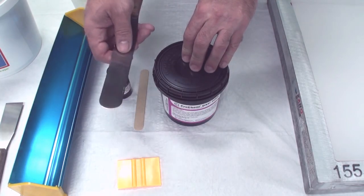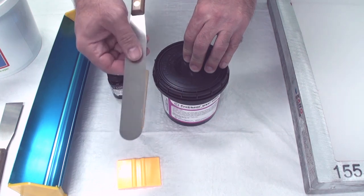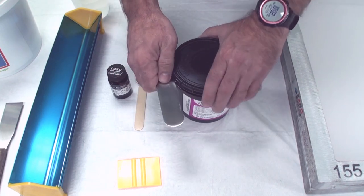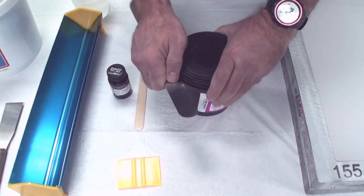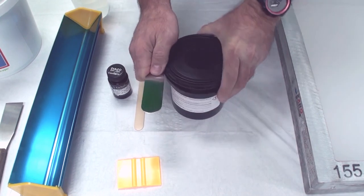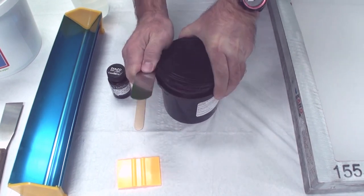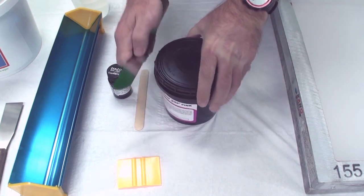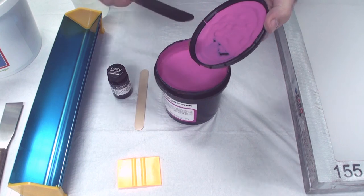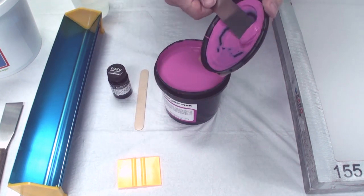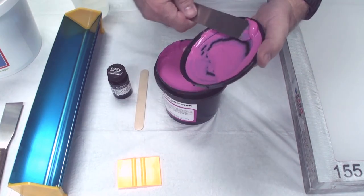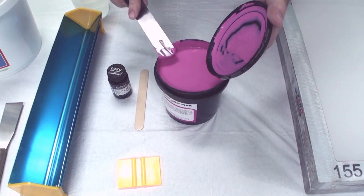For opening the quart container sometimes getting an ink spatula or screwdriver or something like that will make it easier to open. Basically just pry around the container side and that will help open it up. Very easy. Ready to go. If you have emulsion on the lid sometimes just scrape this off and put it back into the quart. You want to try to maximize your total amount of emulsion that you can use.